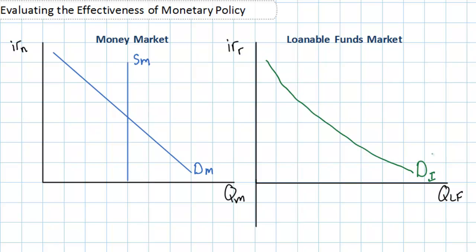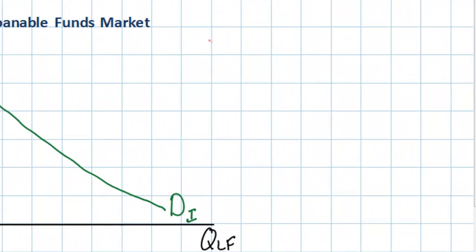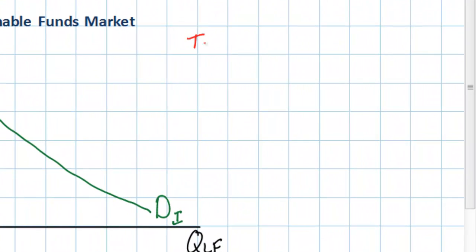But we're not interested in fiscal policy today. What we're concerned with is the effectiveness of monetary policy — and when it may or may not actually lead to an increase in aggregate demand during a demand-deficient recession. In our video on the tools of monetary policy we discussed the different ways a central bank can stimulate aggregate demand during times of recession. Let's review those tools of monetary policy now.